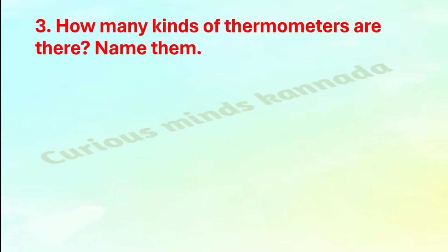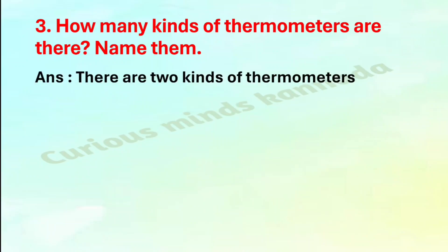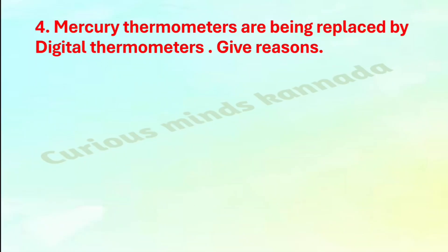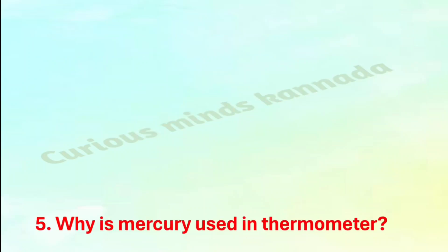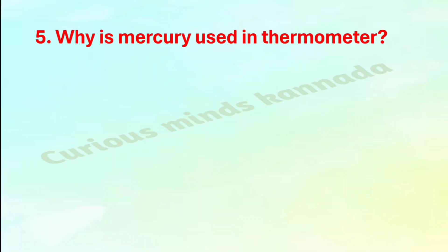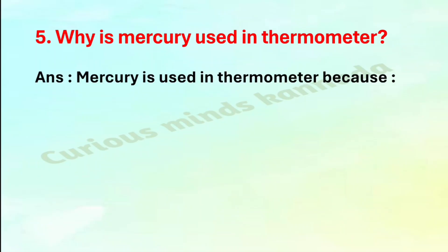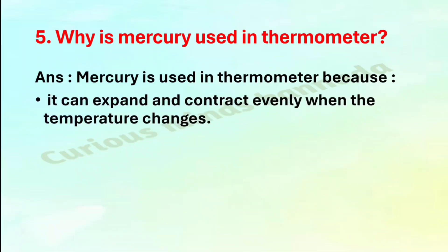Third: How many kinds of thermometers are there? Name them. Answer: There are two kinds of thermometers — clinical thermometer and laboratory thermometer. Fourth: Mercury thermometers are being replaced by digital thermometers — give reason. Answer: Mercury is an extremely toxic substance and is difficult to dispose of in thermometers, so mercury thermometers are being replaced by digital thermometers.